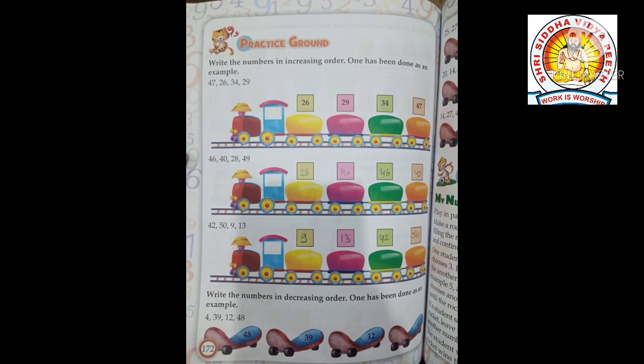Write the numbers in increasing order. One has been done as an example. Increasing order means we write from smallest to biggest — start with the smallest number and end with the biggest. For example: 46, 40, 28, and 49 — the smallest is 28, then 40, then 46, last is 49.